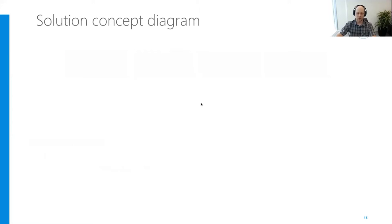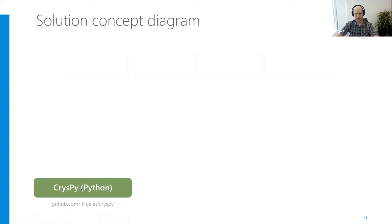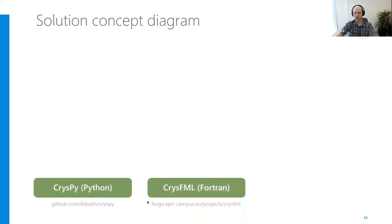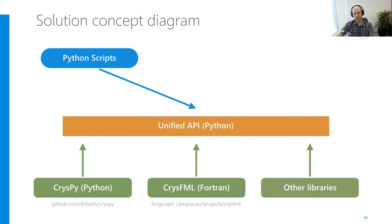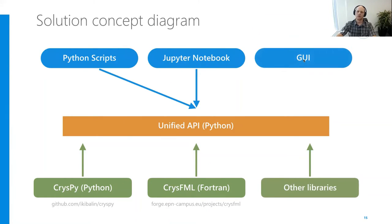The solution concept diagram looks like this: we choose whatever library we need — for example, the new CrysPy Python library, CrysFML Fortran library, and in principle any other libraries we need. Then we create a unified Python API on top of that. The end user will be able to run calculations in those libraries with the same unified interface, from plain Python scripts, using Jupyter Notebooks, or from the graphical user interface. If we need to support another technique, we just implement another library, and the user still has the same unified interface.